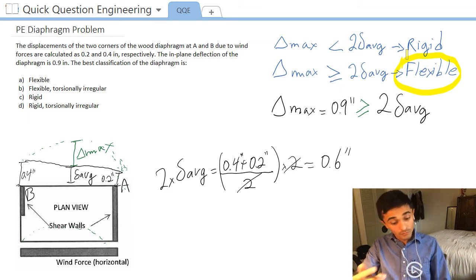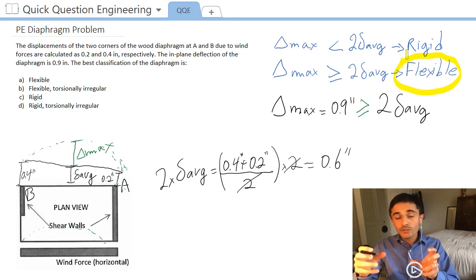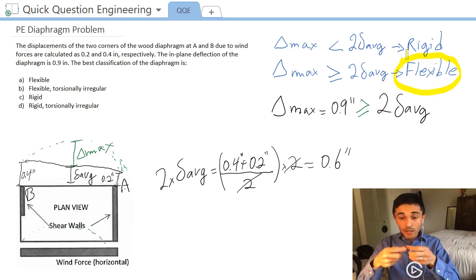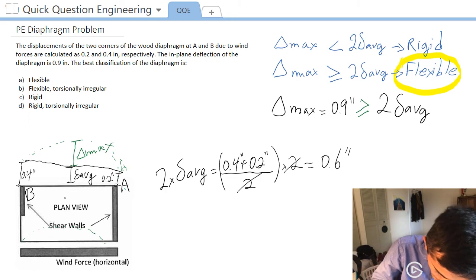Now, is it flexible and torsionally irregular? As we discussed before, if the diaphragm is flexible, it's not going to transfer any moment to the shear wall. So it's literally going to be just the tributary area of each shear wall that will receive the load. And what I mean by that is this wall would receive half of the load and this other wall would receive the other half of the load.